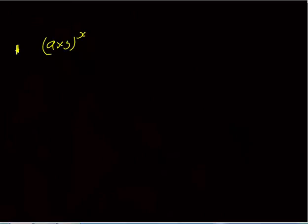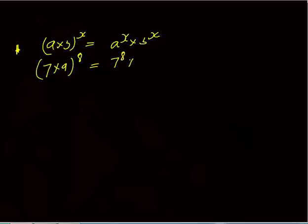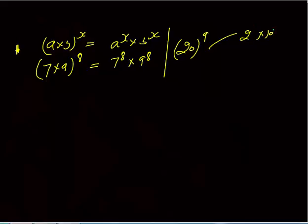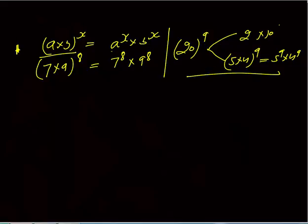Next is A into B power X. A into B, all raised to power X, is equal to A power X into B power X. For example, 7 into 9, all raised to power 8, equals 7 power 8 into 9 power 8. Or if 20 power 9 is given, I can write it as 2 power 9 into 10 power 9, or since 20 is 5 into 4, it becomes 5 power 9 into 4 power 9. You must know both ways — left to right and vice versa.